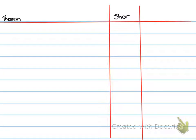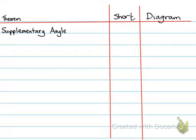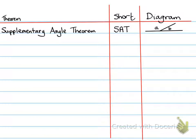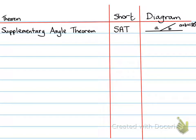A theorem. We're going to build this list over the next couple of lessons. First is the Supplementary Angle Theorem, or SAT. SAT is about a straight line: if a straight angle is broken up into two parts, A and B, then A plus B equals 180 degrees. So all the angles along a straight line always add up to 180 degrees.